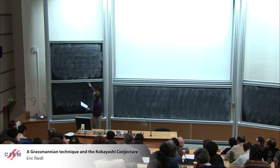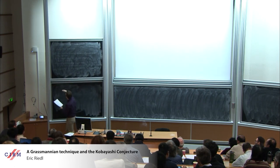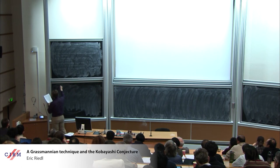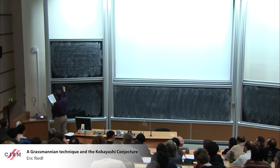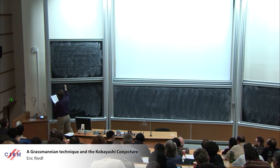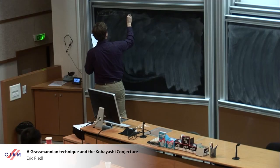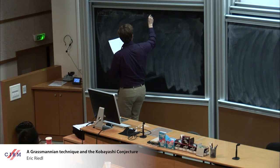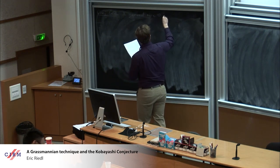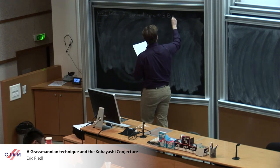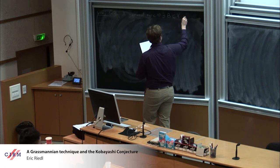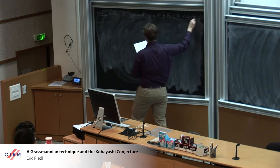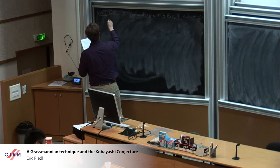I want to mention the Green-Griffiths-Lang conjecture, which I'll abbreviate GGL. If X is of general type, then there's some proper sub-variety B in X that contains all the entire curves.